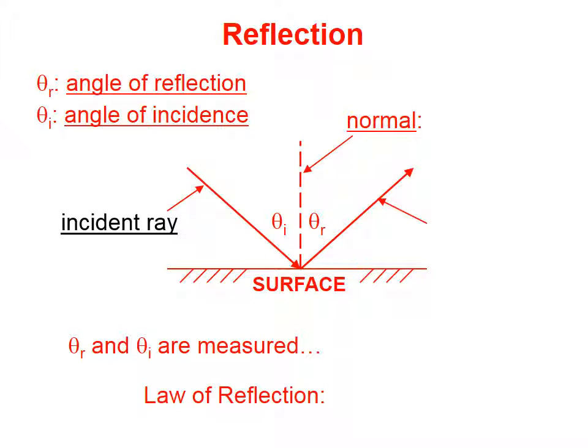When light is emitted from a source, before it hits the surface that we're interested in, we call it an incident ray.